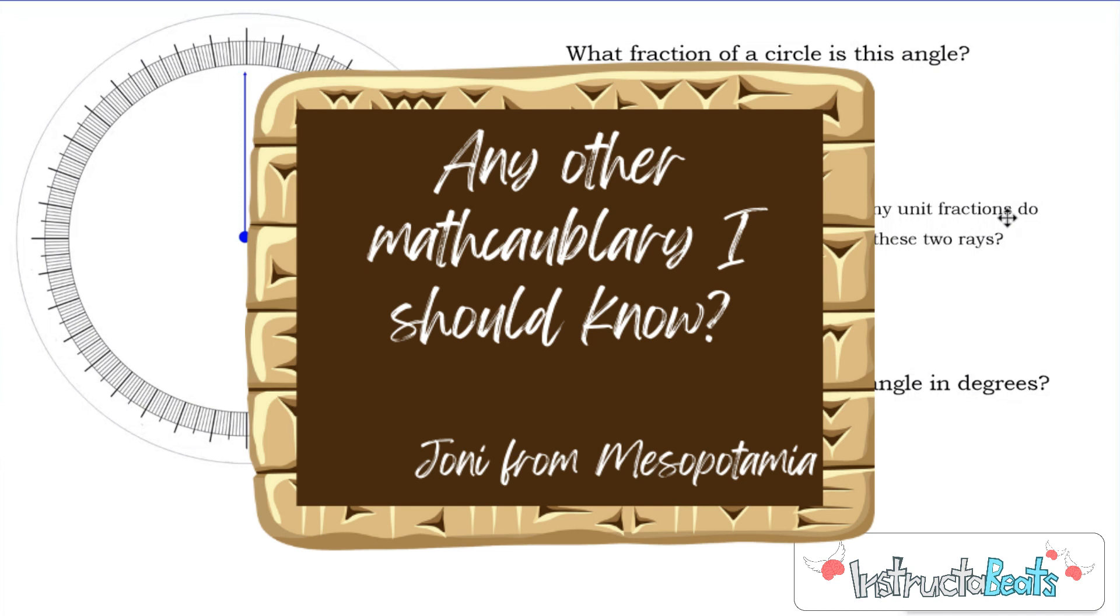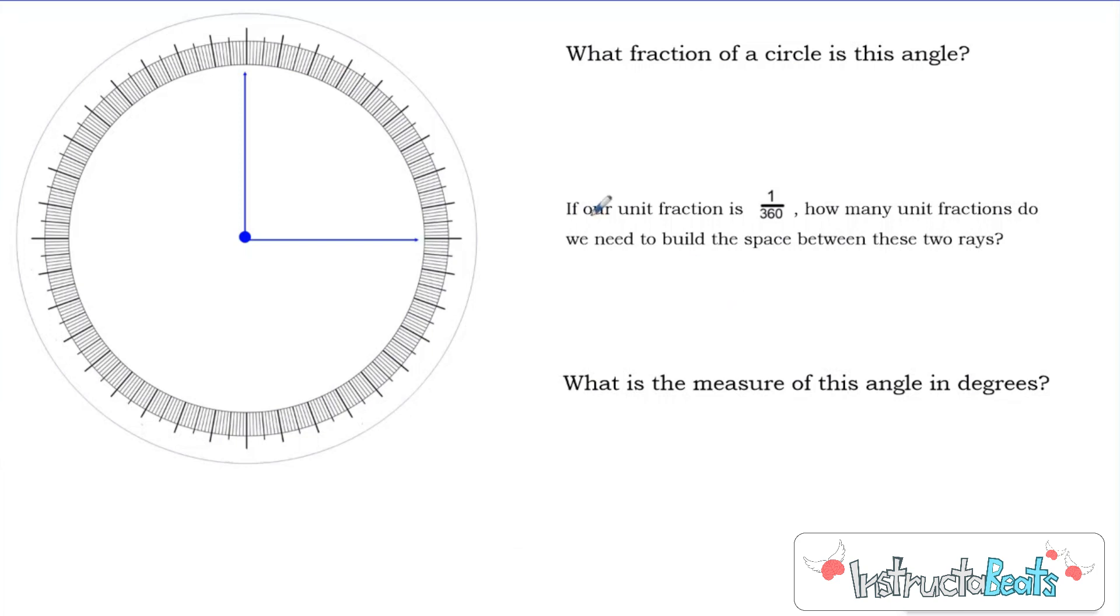Joni from Mesopotamia has another question. Are there any other mathcabulary terms that I need to know? And of course, there is one more. Sometimes we talk about turns in a circle. So for this one, you might say that it took a quarter turn. And so what that's really saying is this is equivalent to one-fourth of a circle. So the space between these two lines is one-fourth of a circle. If, of course, we made that equivalent fraction to make three-hundred-sixty, because any time we write a degree that means the denominator is three-hundred-sixty, that would be ninety-three-hundred-sixtiest, which would be ninety degrees. So if you go one-fourth of a circle or a quarter turn, you are going ninety degrees. And that's actually called a right angle, which we'll talk about in a later video.